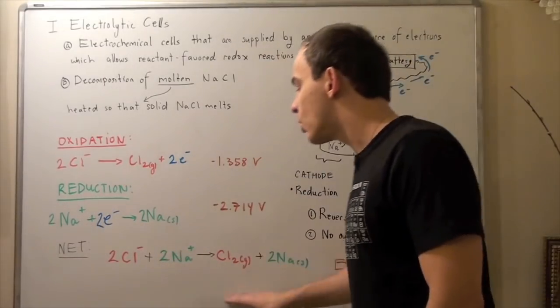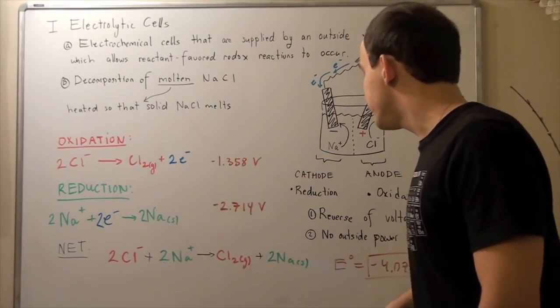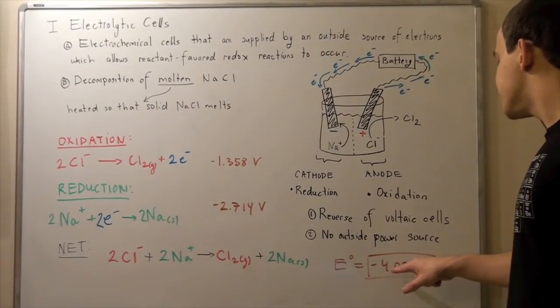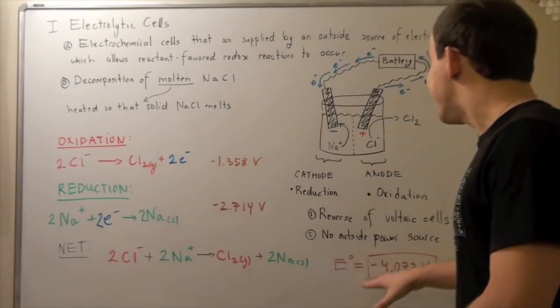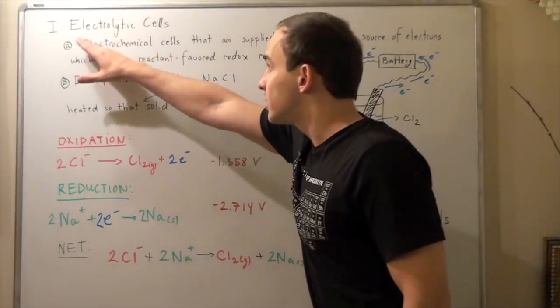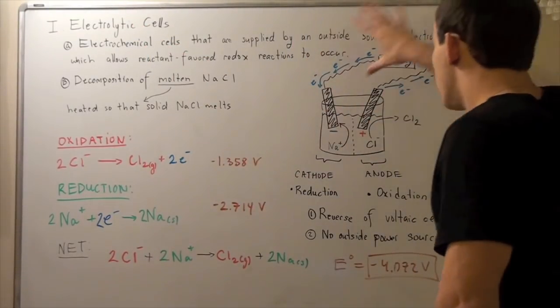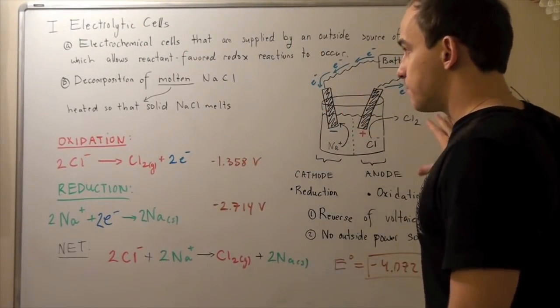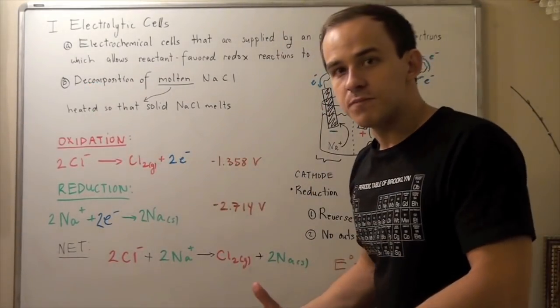Now, to find the net, or the final cell voltage, we simply add these guys up, and we get negative 4.072 volts. So, that means that this much voltage must be supplied to our electrolytic cell by this battery to power this reaction. So, decomposition of this guy requires energy.